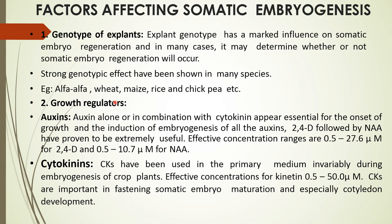Growth regulators — auxin: auxin alone, or in combination with cytokinins, appears essential for the onset of growth and induction of embryogenesis. All auxins, like 2,4-D followed by NAA, have proven to be extremely effective. Effective concentration ranges from 0.5 to 27.6 micromolar for 2,4-D, and 0.5 to 10.7 micromolar for NAA.